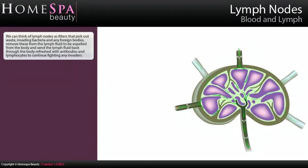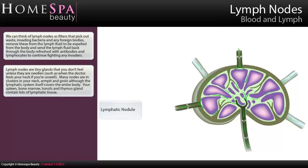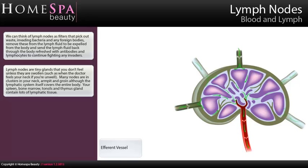Lymph nodes. We can think of lymph nodes as filters that pick out waste, invading bacteria and any foreign bodies, remove these from the lymph fluid to be expelled from the body, and send the lymph fluid back refreshed with antibodies and lymphocytes to continue fighting any invaders. Lymph nodes are tiny glands that you don't feel unless they're swollen, such as when the doctor feels your neck if you're unwell. Many nodes are in clusters in your neck, armpit and groin, although the lymphatic system itself covers the entire body.